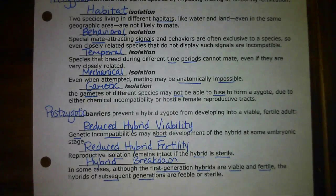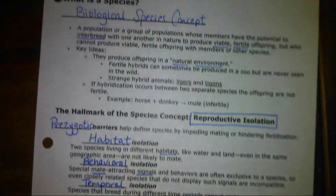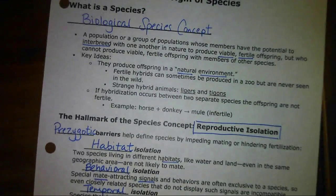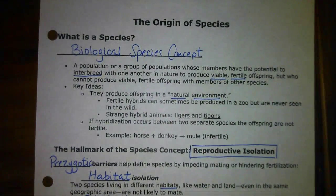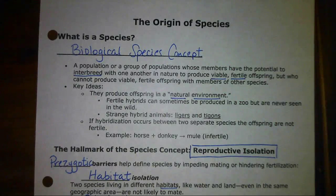This is our final expansion on the idea of what is a species, starting with the definition and showing how two species can actually be reproductively isolated from one another.